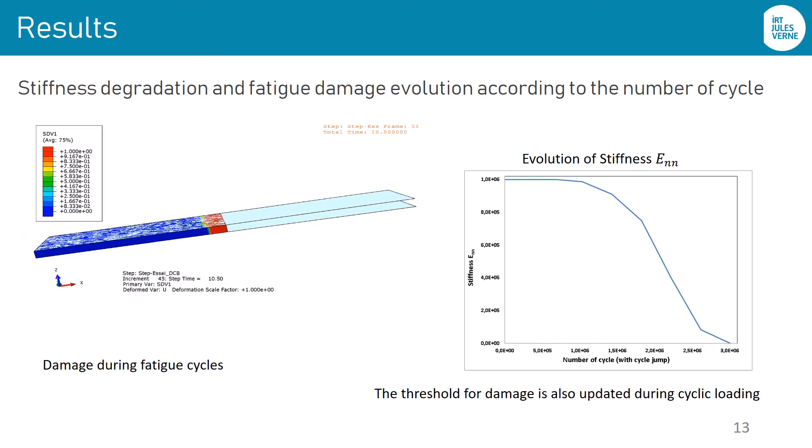Here, we present a video that gives the damage evolution under cyclic loading. As shown by the curve at the right, stiffness degradation for high cycle fatigue could be simulated in acceptable time by using the jump cycle strategy. However, the extrapolation should be verified in order to obtain representative results.